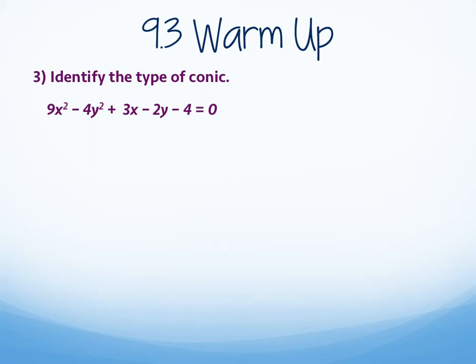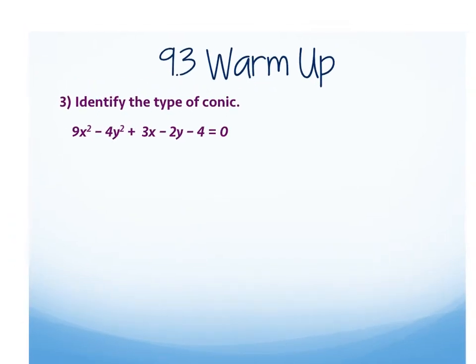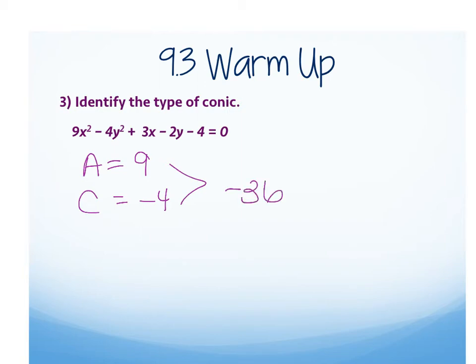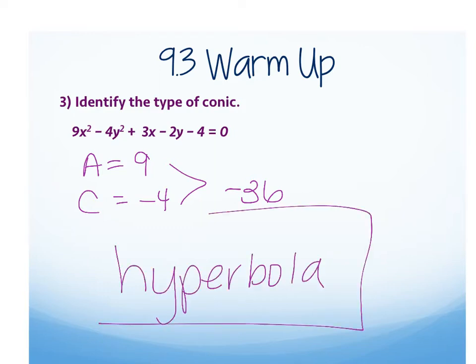For identifying the type of conic, just identify A and C. A is 9, C is negative 4, and their product is negative 36. If the product is negative, it's a hyperbola. Don't get that question wrong — it's probably the easiest one on the whole test.